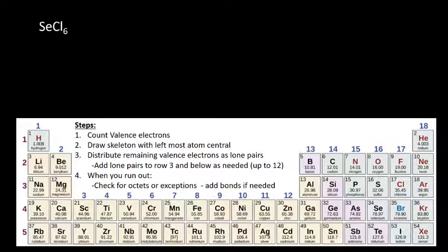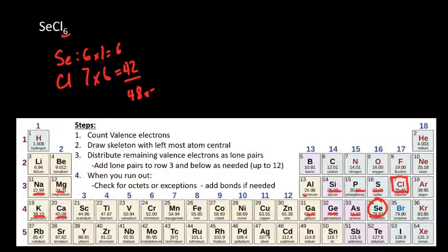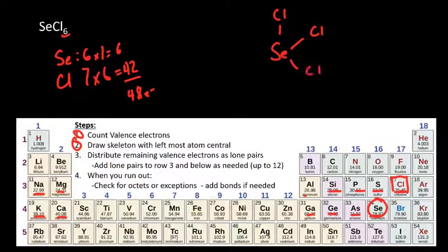Last example: SeCl₆. First, count valence electrons. Selenium is over here — it has 6 valence electrons, and there's one of them, so that's 6. Chlorine has 7 valence electrons, times 6 chlorines equals 42. Adding those up gives 48 total valence electrons — that's a lot. Which one's central? Selenium is more to the left than chlorine, and there are 6 chlorines on one selenium, so selenium is central. Now we draw the skeletal structure and add all 6 chlorines. That's okay because selenium is below row 3, so it can break the octet rule — it's fine to have 6 bonds on it.